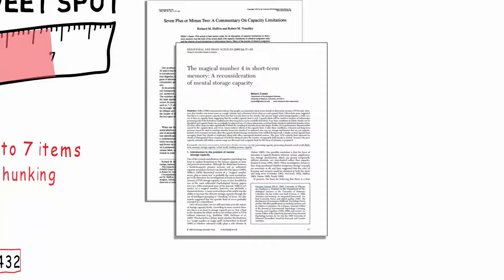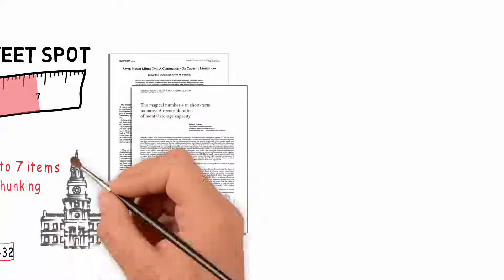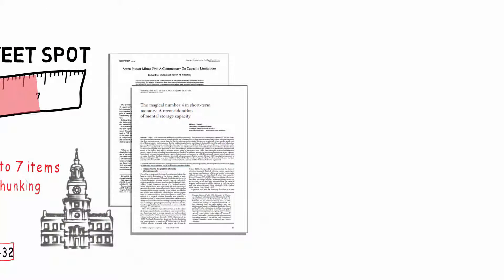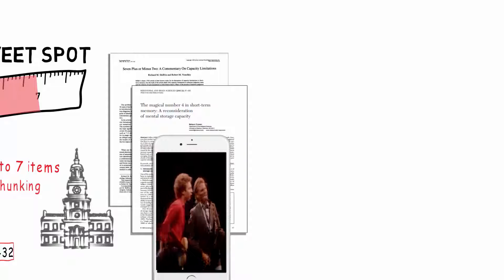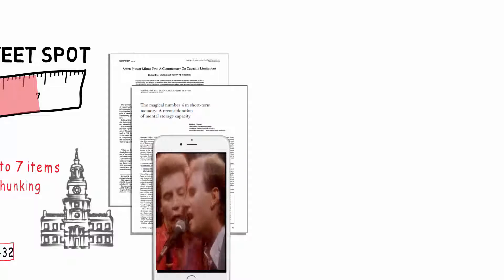More current research suggests that our limits with difficult topics, such as college learning, may be closer to four chunks of information. Naturally, the introduction of electronic media and distractions decreases this more.